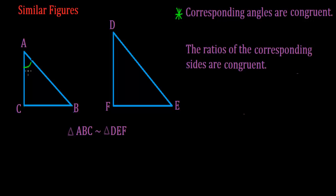For example, I want to find which angle in this figure corresponds to angle A. Here in my statement, I look at the letter A — it's the first letter in this group. So I go to my other set of letters, D, E, F, and the first letter tells me that angle D in the second figure corresponds to angle A from the first figure. That tells me that angle A and angle D are congruent. I use one arc on each to show that these two angles measure exactly the same thing, and I can write: angle A is congruent to angle D.